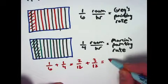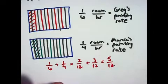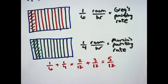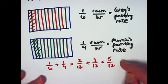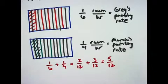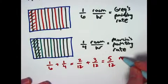Now we've got a common denominator. We can add those fractions and get 2 plus 3 is 5 divided by 12, 5 twelfths. That's how much they can paint of the room in one hour. That's their overall combined painting rate, 5 twelfths of a room per hour. We can label that with units.